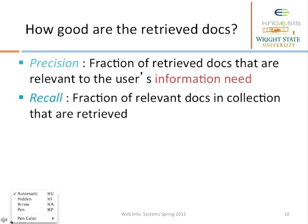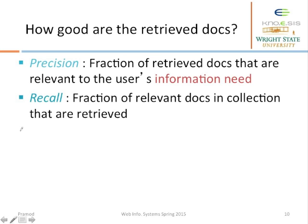Here are the two metrics that we use to evaluate our information retrieval system. The first one is called precision — precision is the fraction of documents that are retrieved and also relevant. Recall is the fraction of documents in the collection that are relevant and also retrieved.